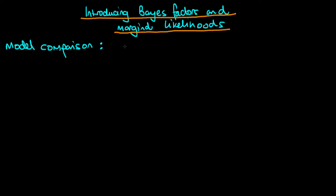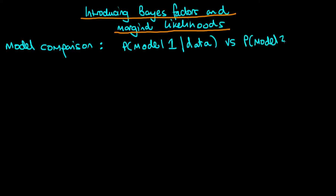Thinking probabilistically about this, one way to frame the problem would be to calculate the posterior probability that we ascribe to model one conditional on the data we collect, and we can compare that with the posterior probability of model two given our data. This is just in the circumstance where we've got two models that we want to compare. But how can we calculate either of these terms? Well, it's not that difficult if we realize that each of these terms is essentially a posterior probability.